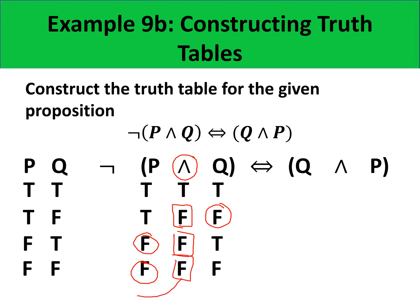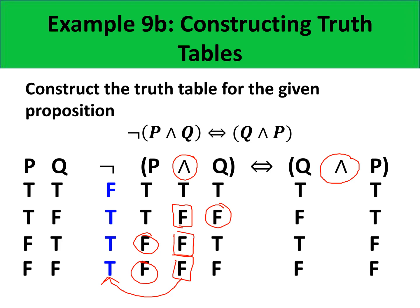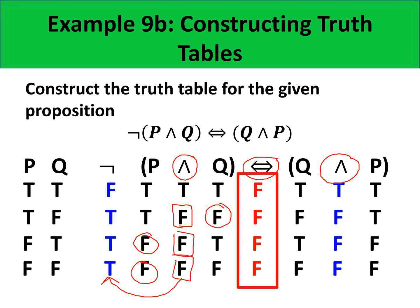After that, we get the negation of this conjunction P and Q, giving us false, true, true, true. Afterwards, we evaluate the conjunction of Q and P, and copying again the values of Q and P and obtaining the conjunction, we get true, false, false, false. Using the two columns with truth values colored blue, we evaluate the biconditional. Observe that for each row, the two blue-colored values are different, so the biconditional will be all false.